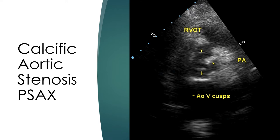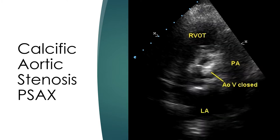The markers show the leaflets. The commissure between the left and right coronary cusps appears fused and thickened. RVOT – right ventricular outflow tract; PA – pulmonary artery. Parasternal short axis view at the level of the aortic valve showing the aortic valve in closed position with significant thickening and calcification. The valve appears tri-leaflet rather than bicuspid.